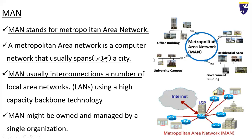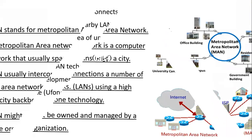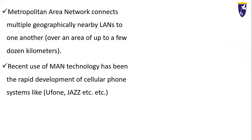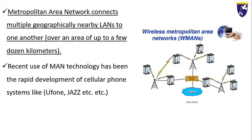MAN might be owned and managed by a single organization. This is an important thing about MAN — it can be owned by a single organization, not by multiple organizations. Metropolitan Area Network connects multiple geographically nearby LANs to one another over an area of up to a few dozen kilometers. So we can say that MAN is a computer network which combines two or more LANs with each other by using a high speed backbone network.